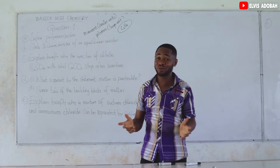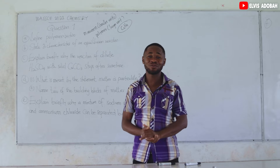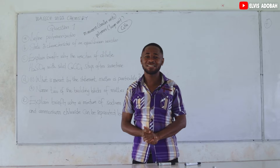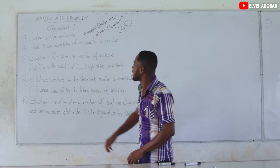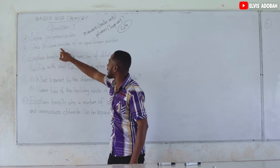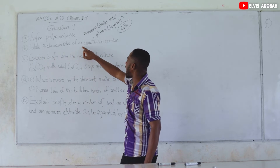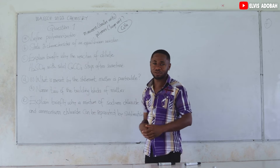So polymerization can also be defined as the process whereby monomers are combined to form a polymer. Several ways of defining it. Now let's look at the B part: state three characteristics of an equilibrium reaction.